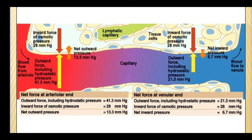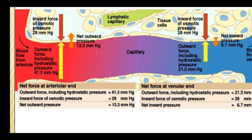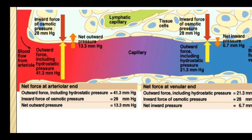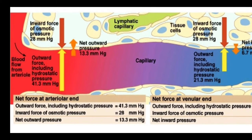This is an important diagram — try to understand it. This shows the way by which oxygen and nutrients are diffused into the cells, and toxic products or end products of metabolism are removed from the cells and carried away to the blood. On the arterial end, the outward force including hydrostatic pressure is 41.3, while the inward osmotic pressure force is around 20. The outward pressure is high — around 13.3 mmHg — helping to force nutrients into the interstitial fluid so that cells get adequate nutrition.